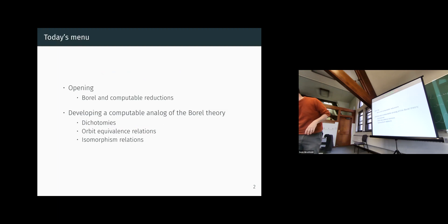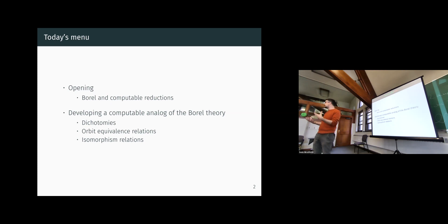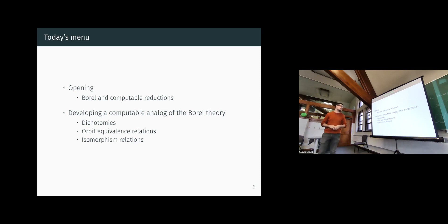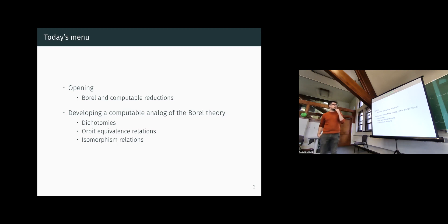I will tell you something about Borel and computable reductions — how they behave. You will see that computable reduction is a very natural effectivization of the Borel one, going from Cantor space to omega. Then I will tell you how these notions combine, building on a really nice paper by Koski, Mkins, and Russell Miller, in which they propose to consider effectivizations of relative equivalence relations by restricting them to the C-sets.